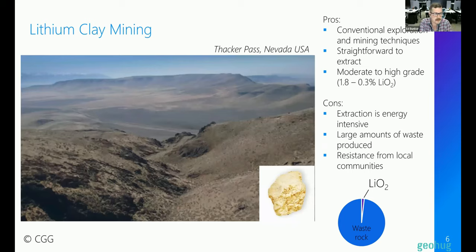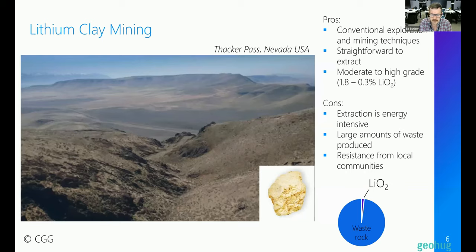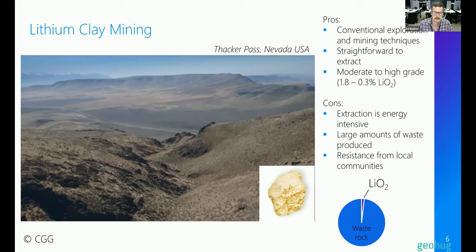Another type is lithium in clays, occurring in places like Thacker Pass in Nevada, USA. Once again, we're using conventional exploration and mining techniques. The grades are moderate to high, but similar downsides apply — it's an energy-intensive process generating a lot of waste in tailings piles. An additional consideration is that the majority of known lithium clay deposits tend to occur in environments where there's resistance to mining, due to indigenous communities or ecological concerns, such as areas of outstanding natural beauty or scientific interest.